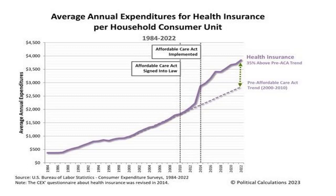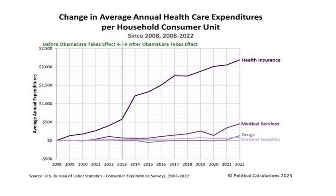This is before even the inflationary effects over the COVID period — this starts back in 2014. You can see what the trend line was before and what it is now, and the health insurance costs rise. Some of that is due to the rising cost of healthcare, but most of it has gone into premiums. The benefactor there has been the health insurance companies, because now they have a captured government clientele.